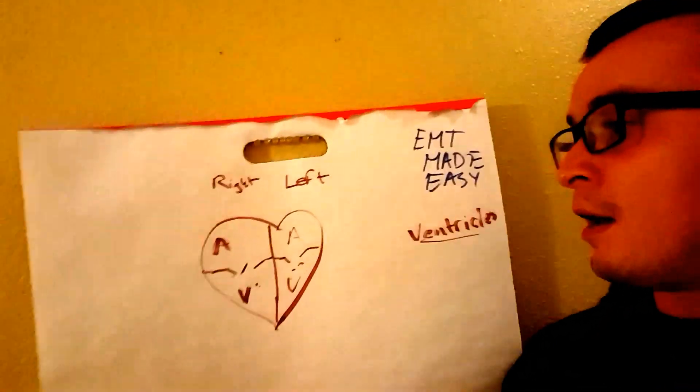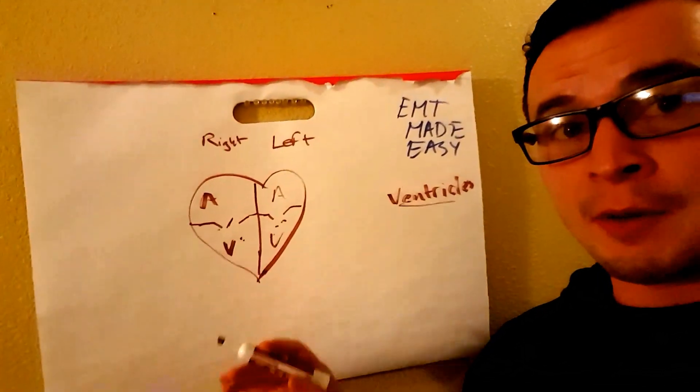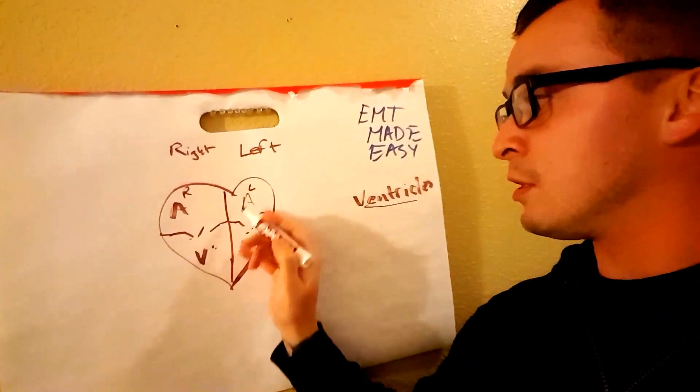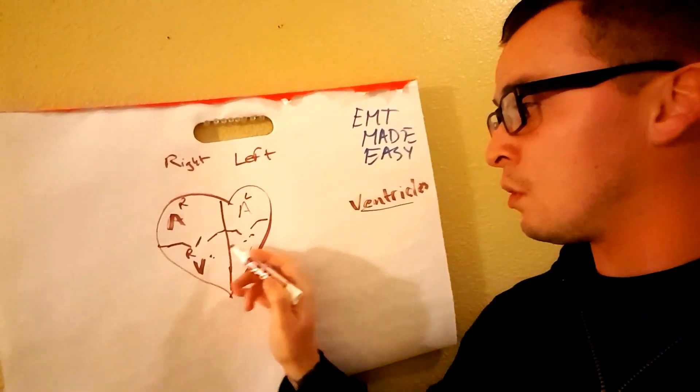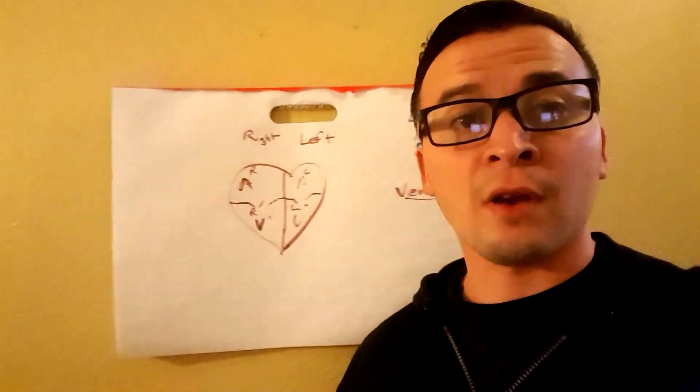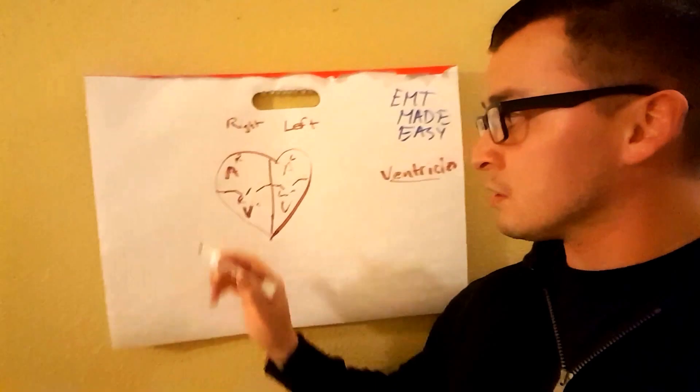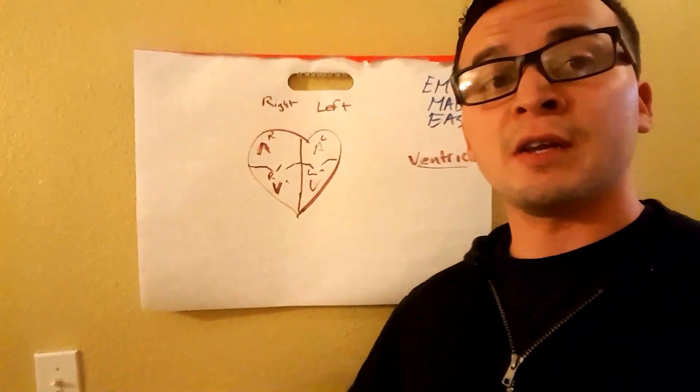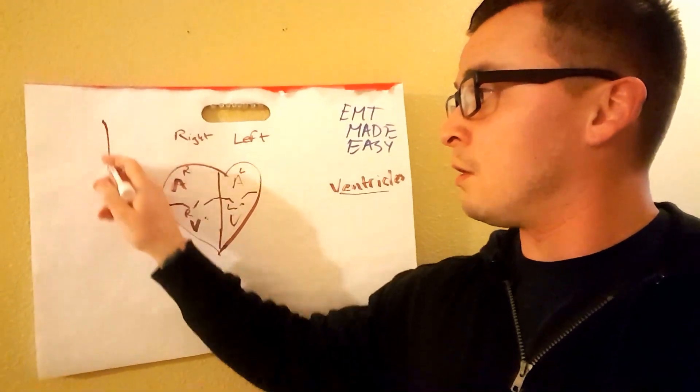All right, so that's the basic anatomy of what you have to know. You have your right atrium, your left atrium, right ventricle and your left ventricle. Now how does the blood flow in the heart? The blood returns from your body after it's been used up through the right side.